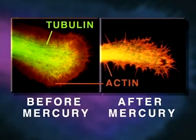Shown here is a neurite growth cone stained specifically for tubulin and actin, before and after mercury exposure. Note that the mercury has caused disintegration of tubulin microtubule structure.